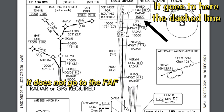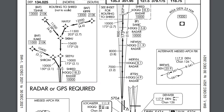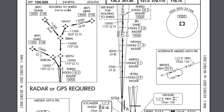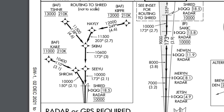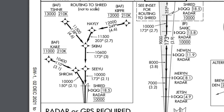Depending on what STAR you're using and the direction you're coming from, that will play a part in which initial approach fix you'll be using. For today's tutorial we're going to pretend we're coming in on the Kipper initial approach fix. One of the first things to notice underneath the Kipper identifier is 12,000 with a line above and below it. That lets us know it is a hard flight level — you can't go above or below that. When you hit Kipper you have got to be at 12,000 feet.